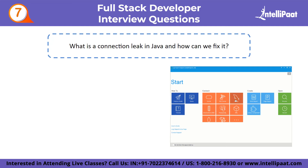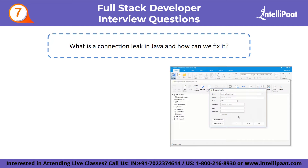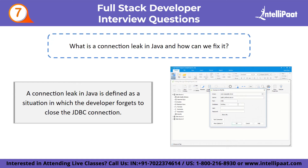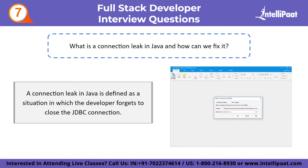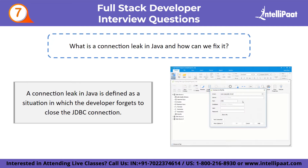A connection leak in Java is defined as a situation in which the developer forgets to close the JDBC connection. When using a connection pool, this is the most common type of connection leak encountered in Java development. We can resolve it by disconnecting the connection and paying close attention to the error handling code.